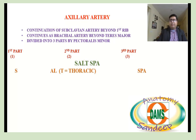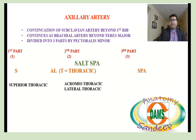To decode: S means Superior at T (thoracic), giving Superior Thoracic artery. A is Acromio at T (thoracic), giving Acromiothoracic artery. L is Lateral at T (thoracic), giving Lateral Thoracic artery. So Superior Thoracic is the branch from the first part, and Acromiothoracic and Lateral Thoracic are the two branches from the second part.